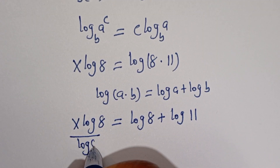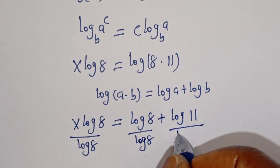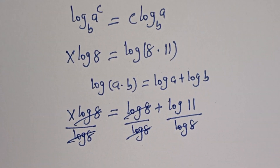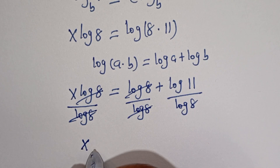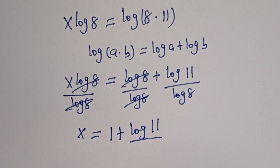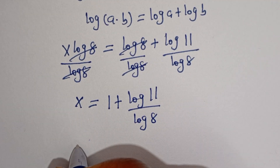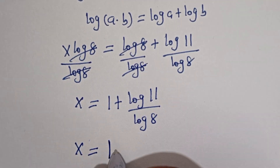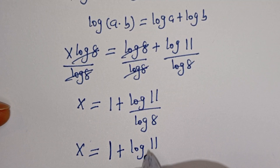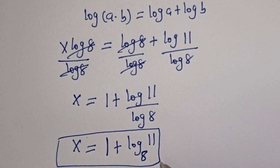Now we are looking for the value of s. Let's divide both sides by log 8. This will cancel this, so s is equal to 1 plus log 11 divided by log 8. This is the final answer from the first method.